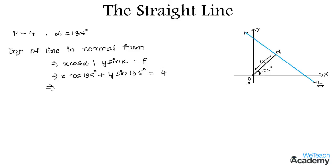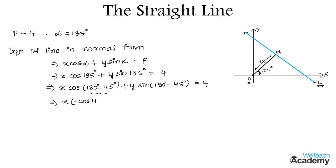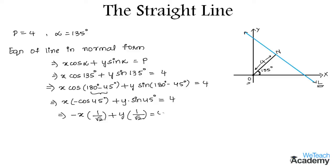Now we can write cos 135° in the form of cos(180° - 45°) and sin 135° as sin(180° - 45°). Using the identity cos(180° - θ) = -cos θ and sin(180° - θ) = sin θ, we get x·(-cos 45°) + y·sin 45° = 4. So that implies -x·(1/√2) + y·(1/√2) = 4.